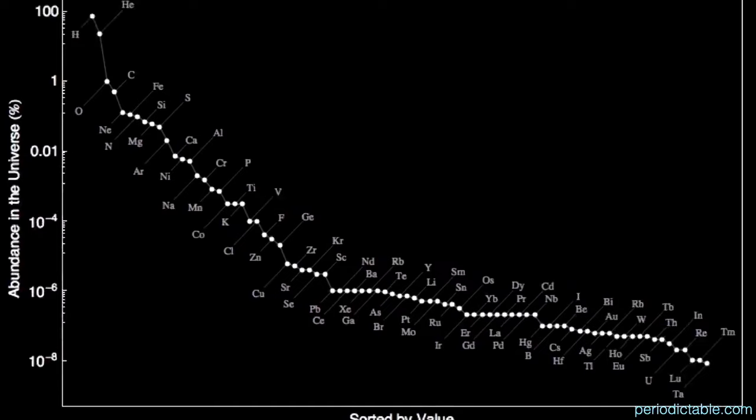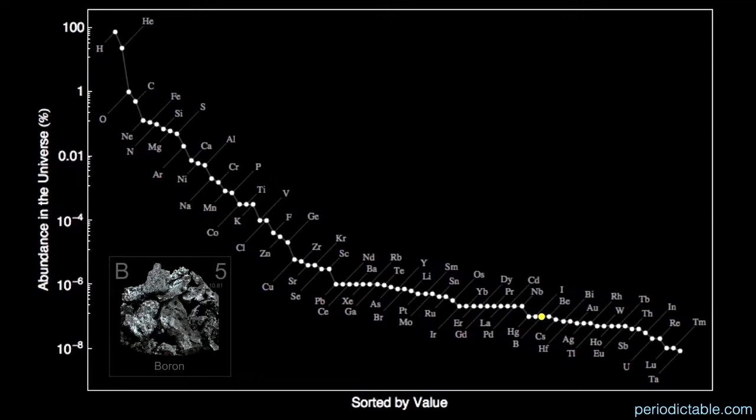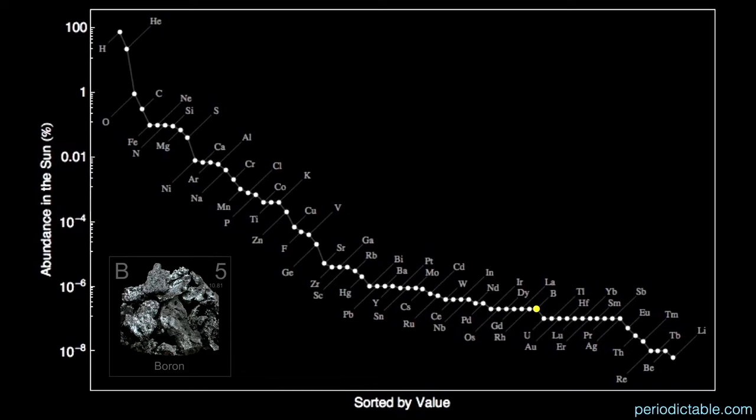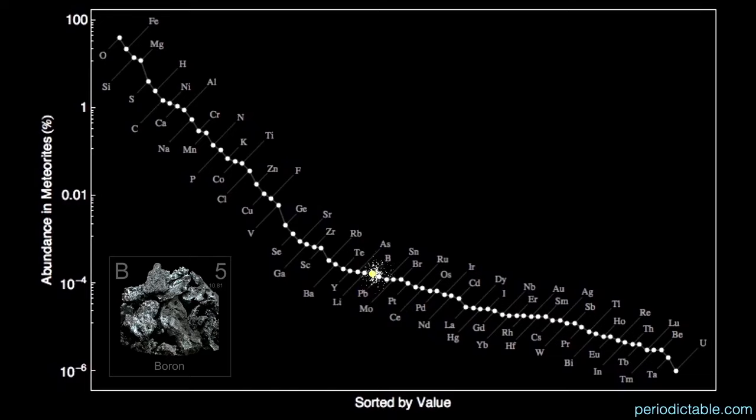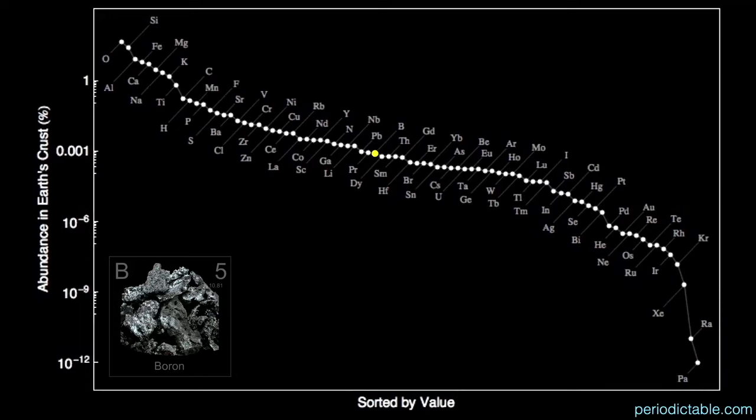Even though boron is the fifth element in the table, it's still pretty rare, coming in as the 64th most abundant element in the universe by mass, only one part per billion. Twice as abundant in the sun, it's the 56th most abundant element at two parts per billion. It's the 36th most abundant element in meteorites, much more common, at 1.6 parts per million. The crust of the Earth is a virtual treasure house of elements — boron is the 38th most common element at 8.6 parts per million, four times as common as tin.